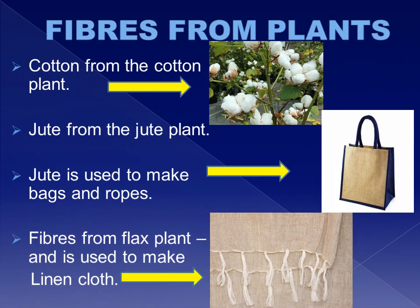We also get fibers to make cloth from plants. We get cotton fibers from the cotton plant. We also get jute from the jute plant — jute is used to make bags and ropes. The fibers from the flax plant are used to make linen cloth.